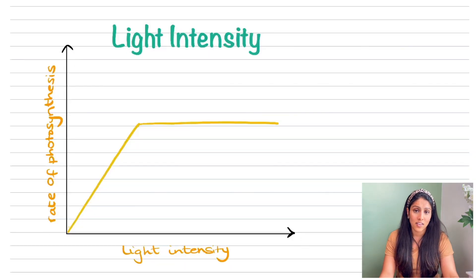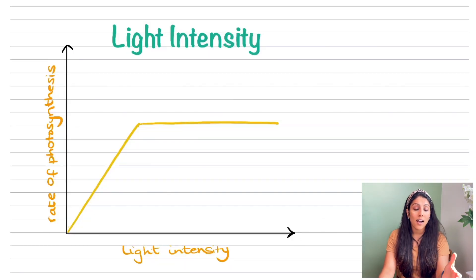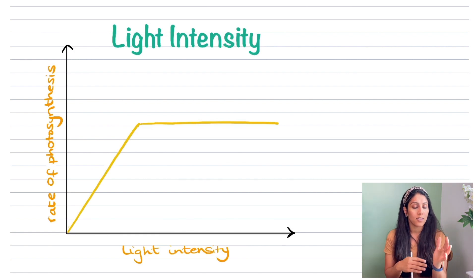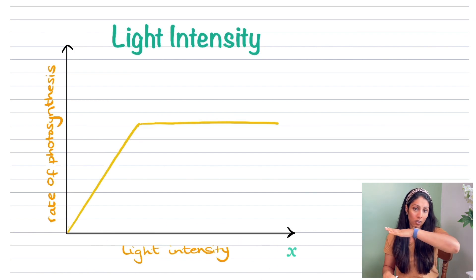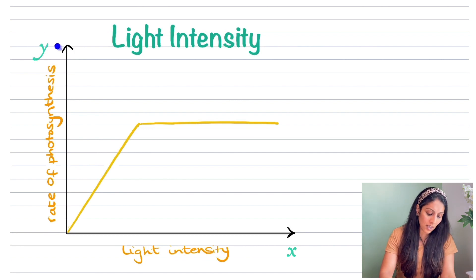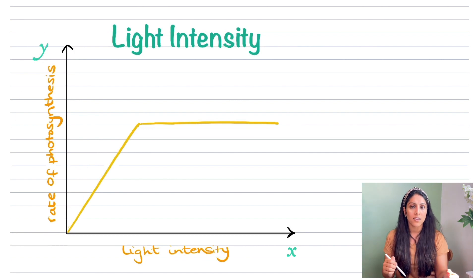A limiting factor is anything that limits or restricts something from reaching its maximum potential. The second and most important factor for photosynthesis to occur is light intensity. Many students find it difficult to read these graphs. The limiting factor will always go on the x-axis — the one that goes horizontally — and the y-axis will show the rate of photosynthesis.